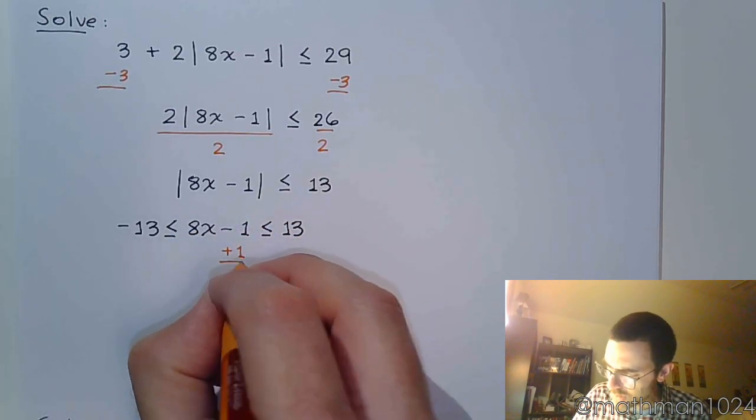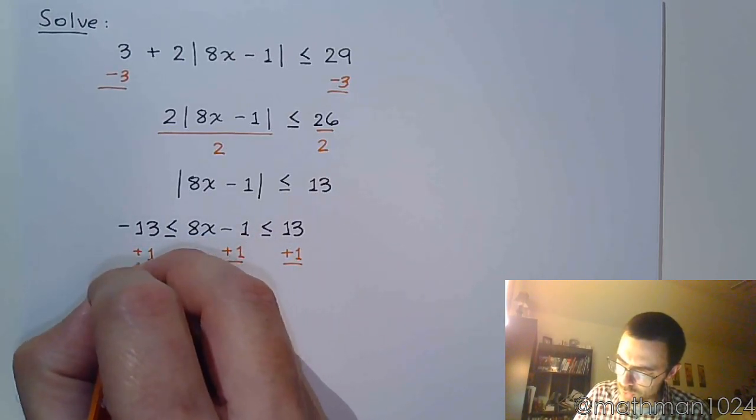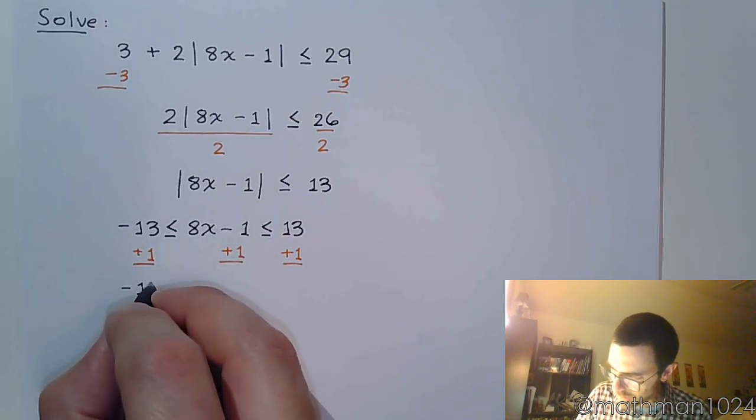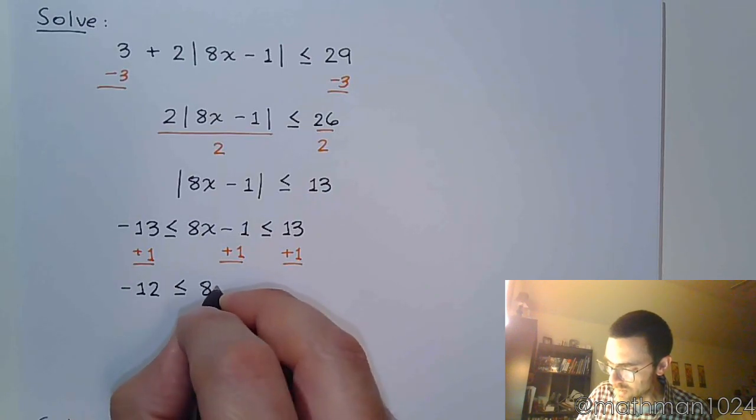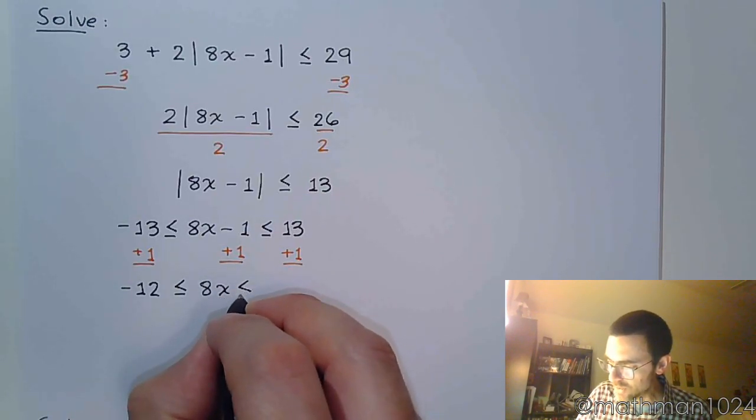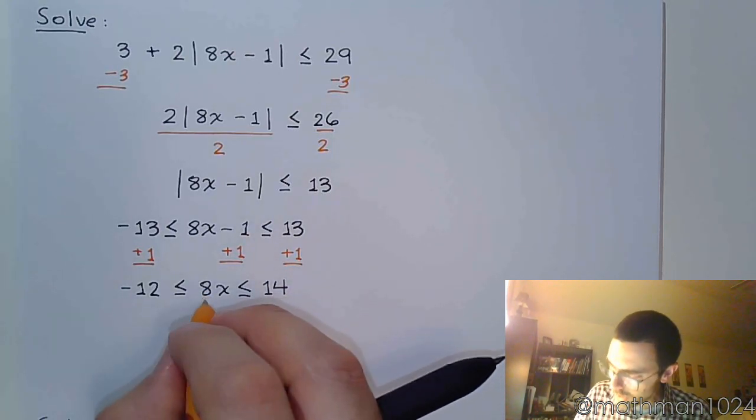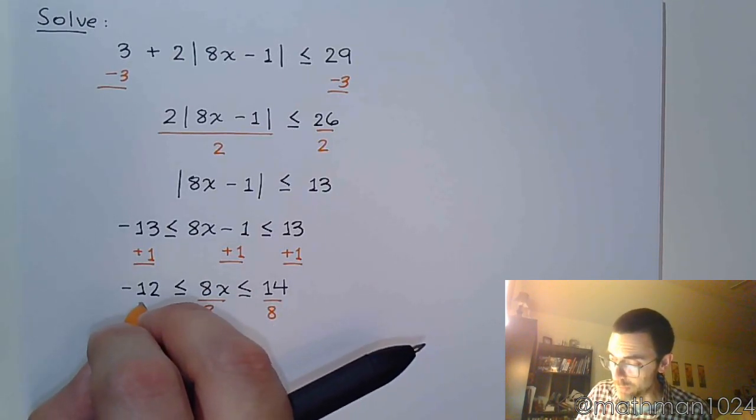So first things first, move that constant by adding 1 to all three parts. So we get negative 12 is less than or equal to 8x, which is less than or equal to 14. And we're almost there. We just have to finish solving for x by dividing by 8.